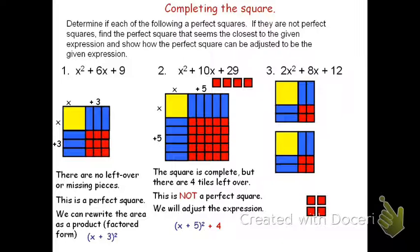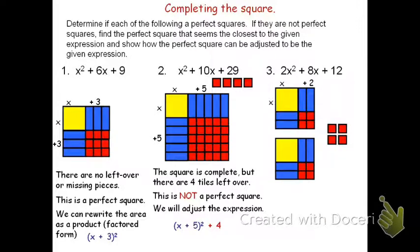Each of those squares has a dimension of x + 2 by x + 2, which means we have 2 of the quantity (x + 2)², plus the 4 left over. 2x² + 8x + 12 can be thought of as 2(x + 2)² + 4 left over. I hope this helps you. Thank you for watching this video.